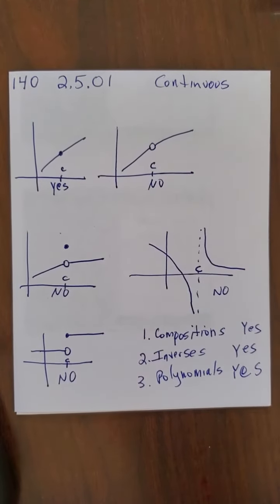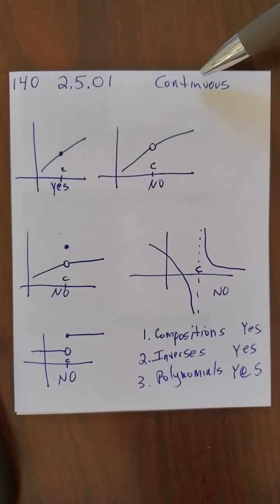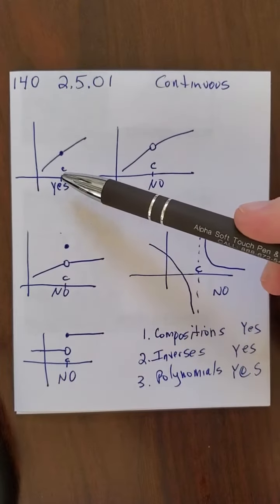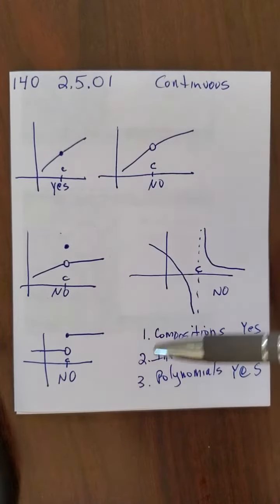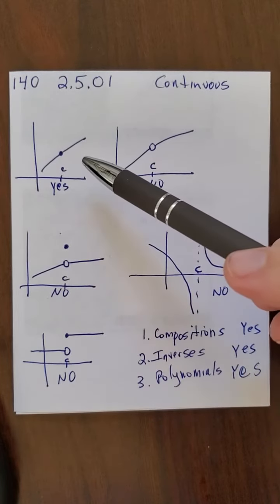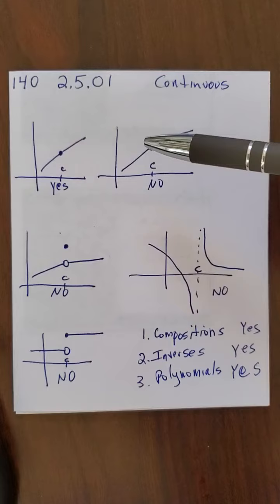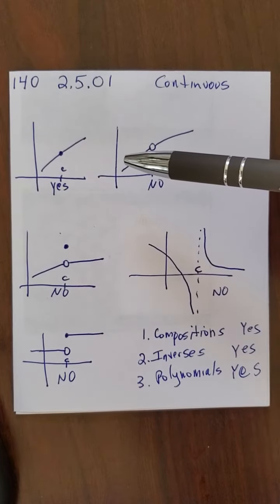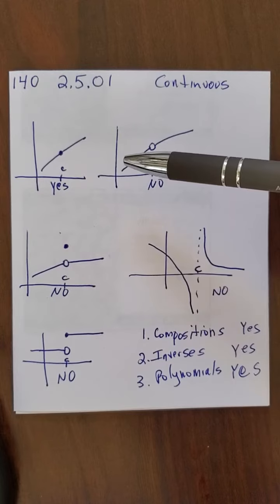Well, here we are in section 2.5, and this is continuous functions. So we're looking here, this is the value C. I'm looking at the constant C. That's always the crucial point here. So this function here, a function is continuous. You know, there's an official definition, and I put that definition in the section, in the theorem and definition sections of our Google Drive.